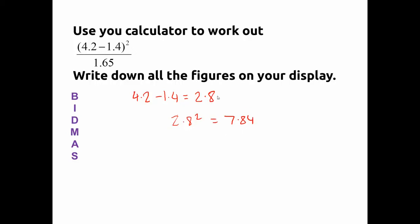This is now the result of what was above the divide line. So we simply divide 7.84 by 1.65.